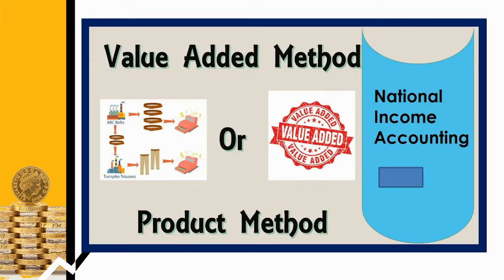There are several precautions to be followed in underdeveloped countries for calculating national income. In India, this method is applied in agriculture, mining, manufacturing, and handicraft industries. The first precaution under the product method is double counting — it should be avoided. Under the value added method, any commodity which is either a raw material or intermediate good for the final production should not be included. For example: